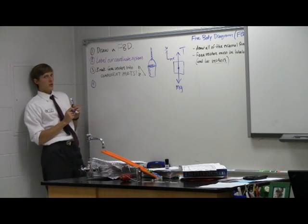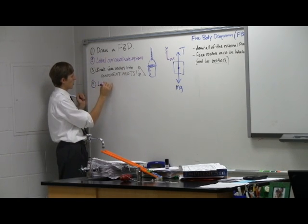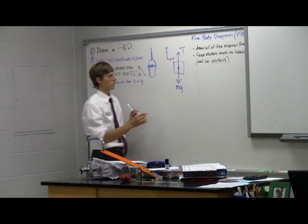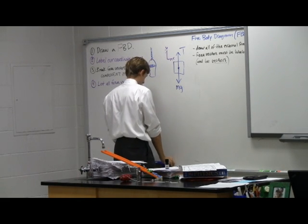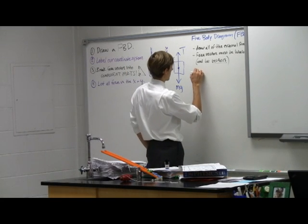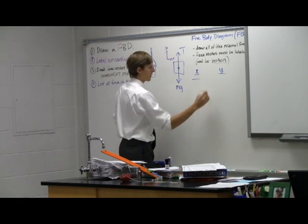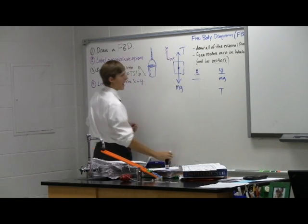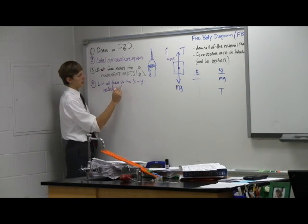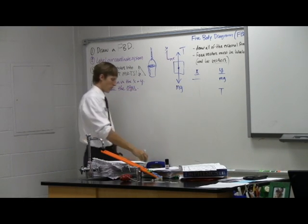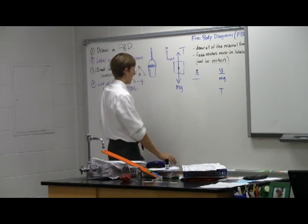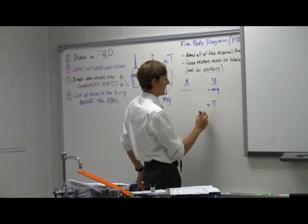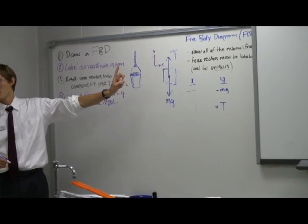Step four: list all forces in the X and Y. In the X direction, what forces do I have? None. In the Y direction: mg and T. But this step is not done — we need to include the sign. Positive or negative in relation to the coordinate system. Mg points down, therefore it's negative. T points up, therefore it's positive.